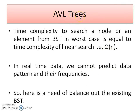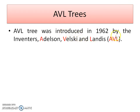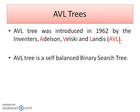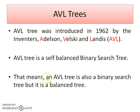For balancing, a new concept is introduced — the AVL tree. The AVL tree was introduced in 1962 by three scientists: Adelson, Velsky, and Landis. The first letters of these scientists' names are given to this tree — AVL. This AVL tree is a self-balanced binary search tree.